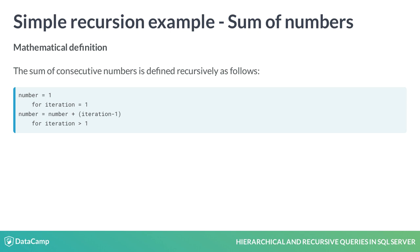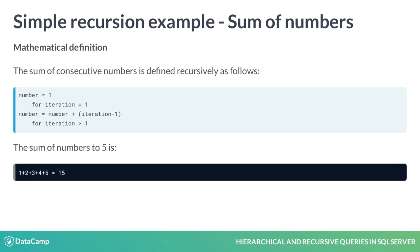As an example, the result of 5 is 15. It is the sum of 1 plus 2 plus 3 plus 4 plus 5.